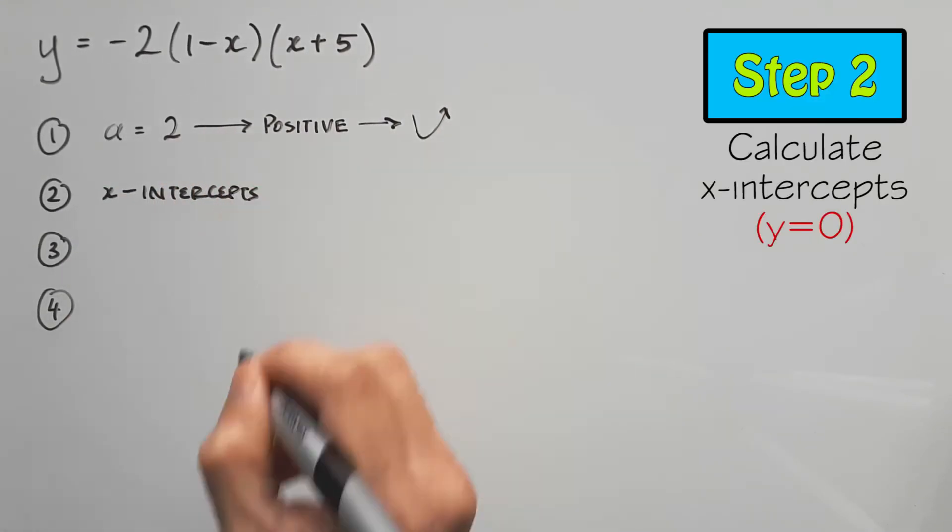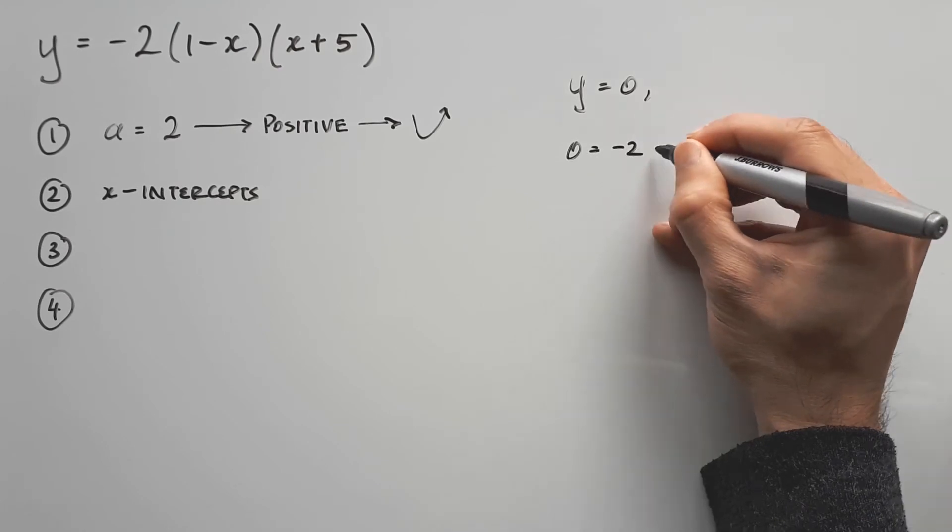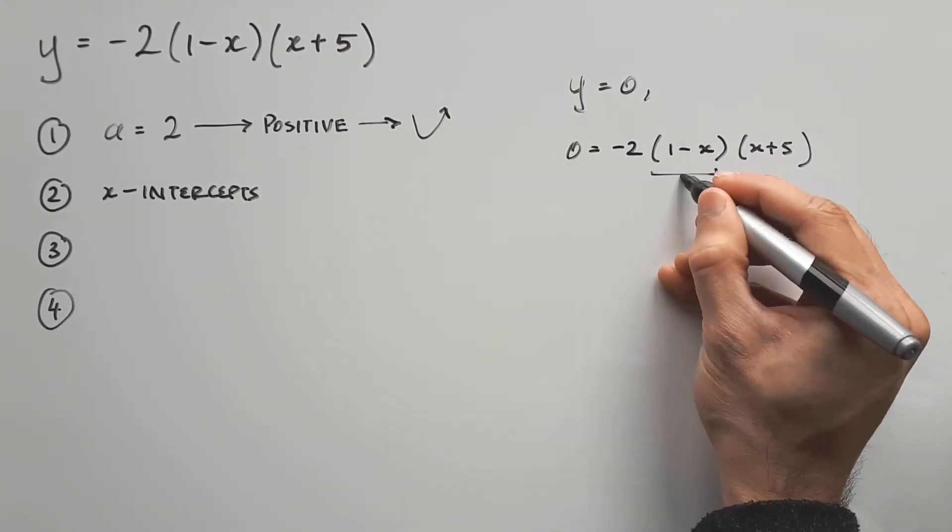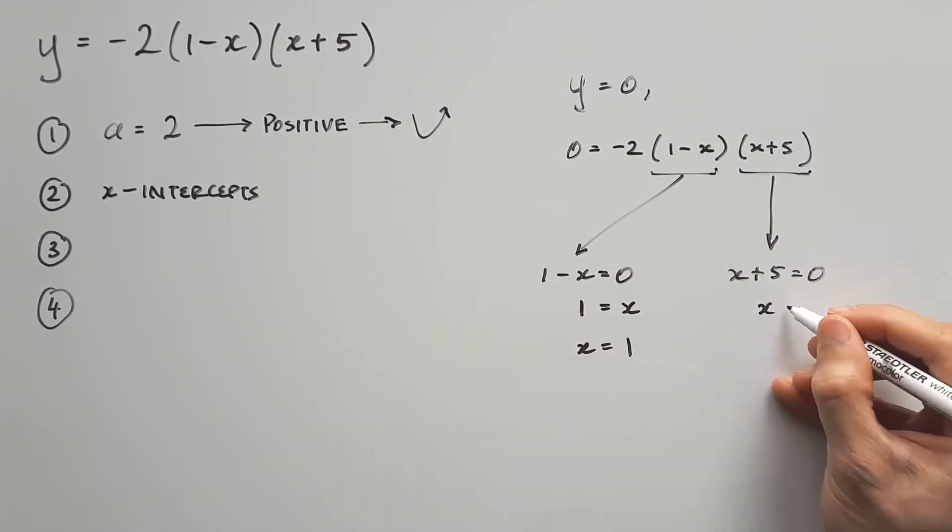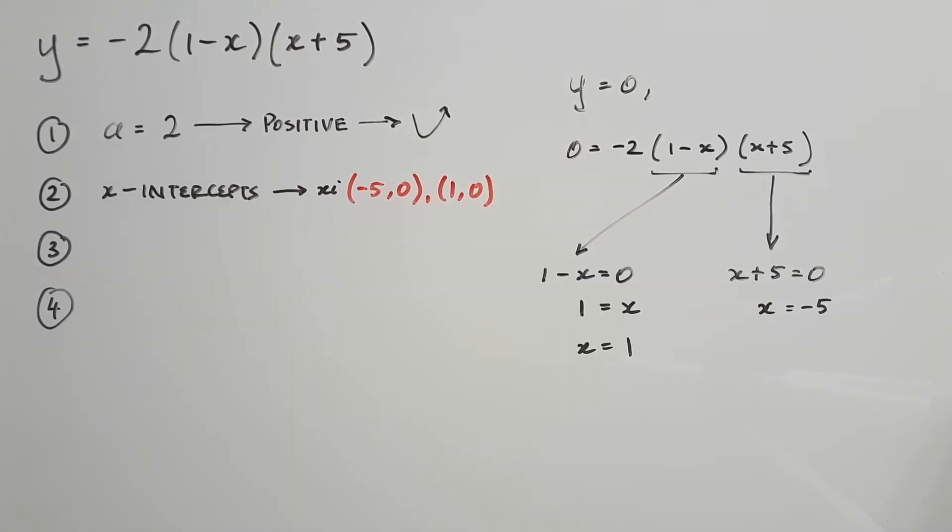Step 2: Find the x-intercepts. Some of you may prefer to work it out logically from the factors, but if you want to do it mathematically, you can use the null factor law. Basically, when y equals 0 for the x-intercepts, one of these factors needs to equal 0 for it to be true. So equate each factor with 0, then rearrange them to find x. So the intercepts are at negative 5 and positive 1. At this stage we can draw the parabola, but it won't be good enough for an accurate sketch. It just gives you a big picture of what's going on. So let's keep going.